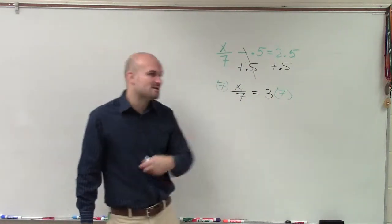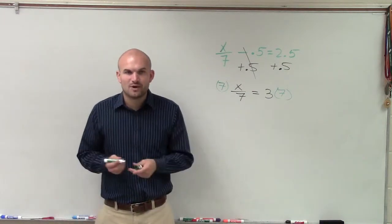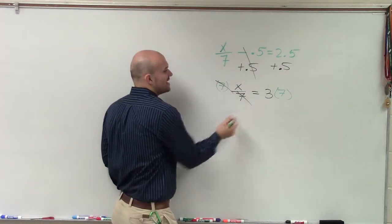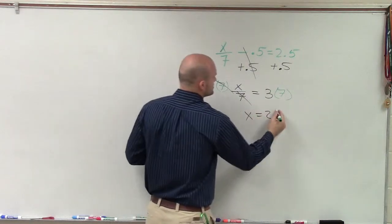Well, if my x is being multiplied by 7 and divided by 7, I'm just going to have what left over? X. So we say the 7s divide to 1. One times x is just x. Three times 7 equals 21.